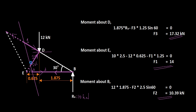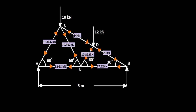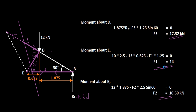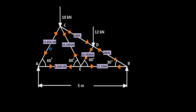We have now found the forces on members 1, 2, and 3: 14 kN, 10.39 kN, and 17.32 kN respectively, with their corresponding directions shown on the complete truss. The other forces were calculated in the previous video using the method of joints. If you have any doubts, please go through the videos on method of joints and method of sections, as well as the videos on support reactions, forces, and moments.